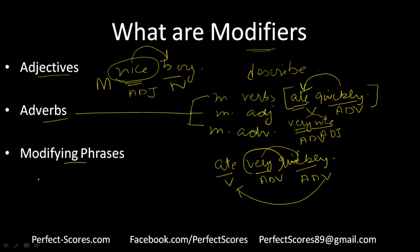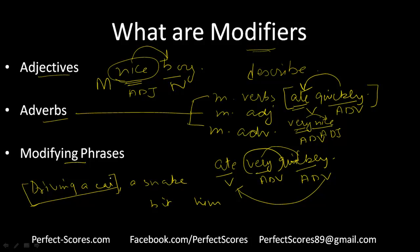Then you have modifying phrases. For example: 'driving a car, a snake bit him.' This entire phrase 'driving a car' is talking about the person. This is actually an example of a wrong modifier sentence, because it looks as if the snake was driving a car. It should be 'driving a car, he was bitten by a snake.' The phrase tells us something about the person who is the center of action.